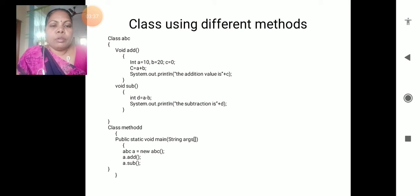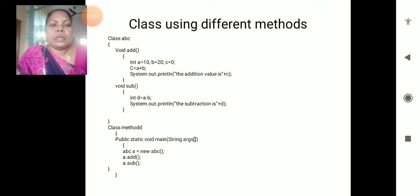Then followed by the second method also - we are calling a dot sub, using the sub method, taking the variables and displaying the variable. So here, closing the statements - however many methods we are taking is sufficient.